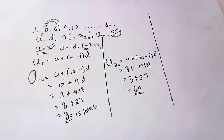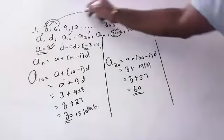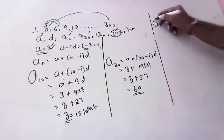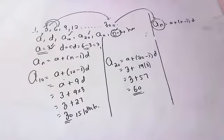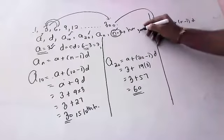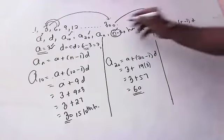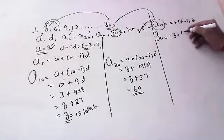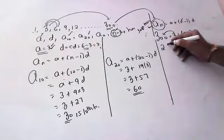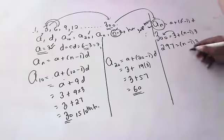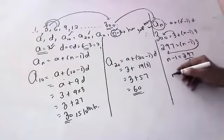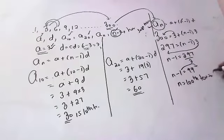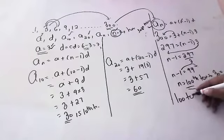I also want to find how many terms there are — that is n. We use the formula: aₙ = a + (n−1) × d, where aₙ is the last term. The last term given is 300. So 300 = 3 + (n−1) × 3. This gives 297 = (n−1) × 3, so n−1 = 297 ÷ 3 = 99, therefore n = 100. There are 100 terms in this sequence.